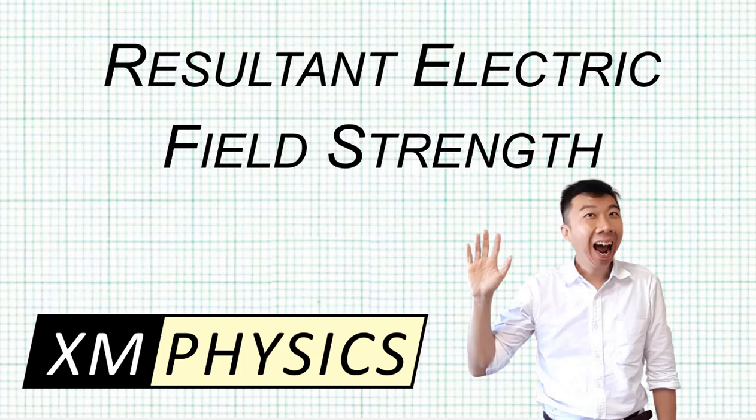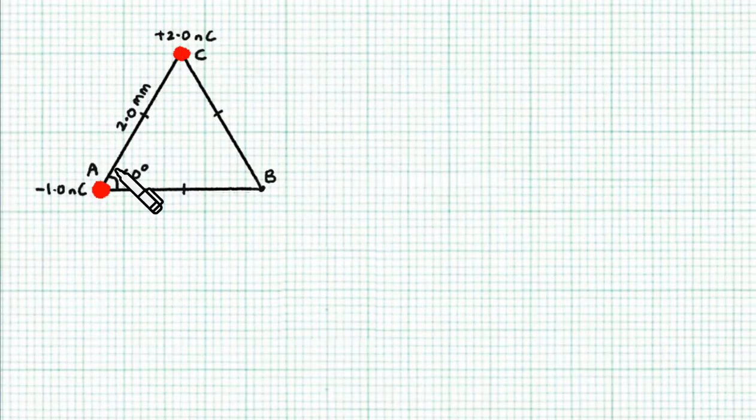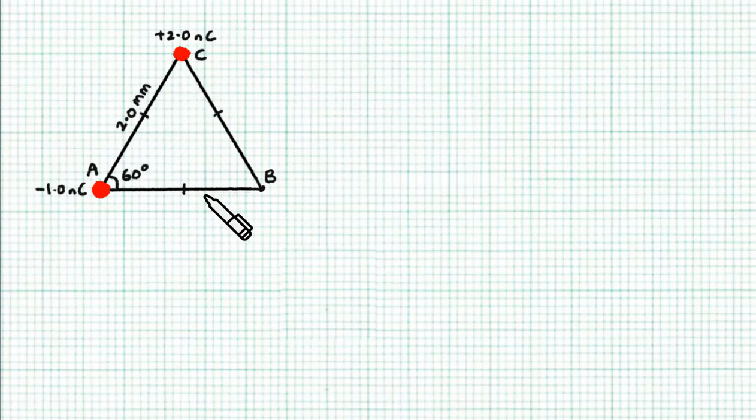Hello everyone, this is XMPhysics. Here's an example for calculating the resultant electric field strength. We have charges A and C sitting at two corners of an equilateral triangle of length 2.0 mm, and we're going to calculate the resultant electric field strength at position B.